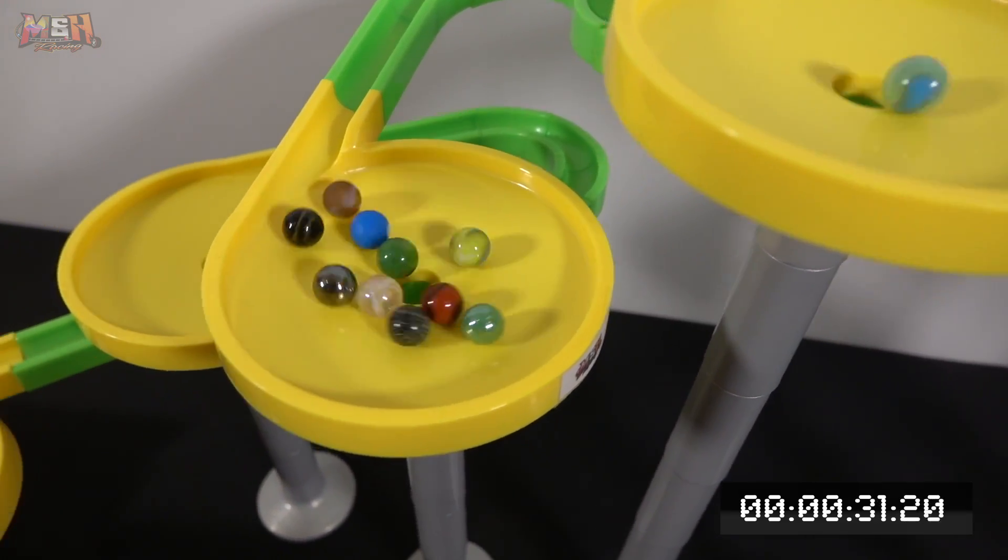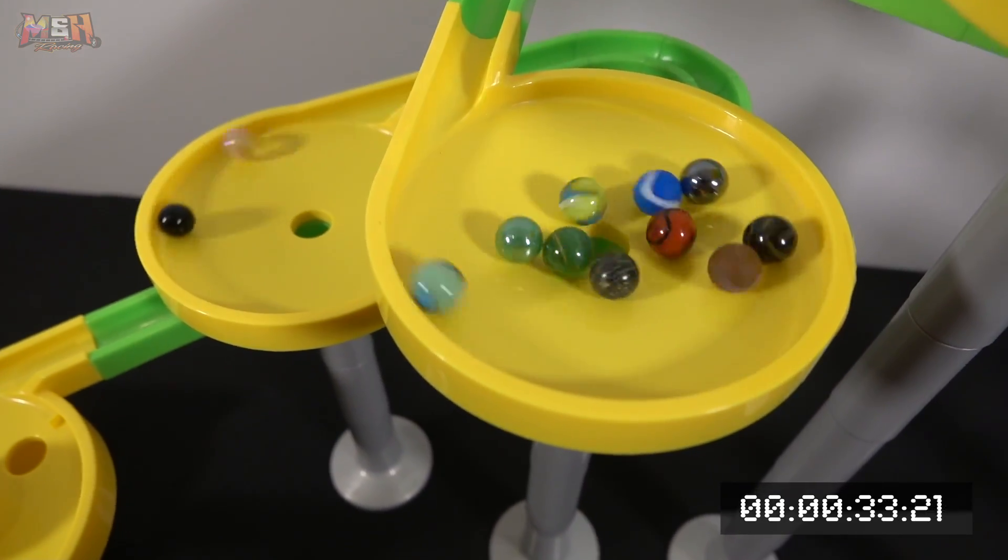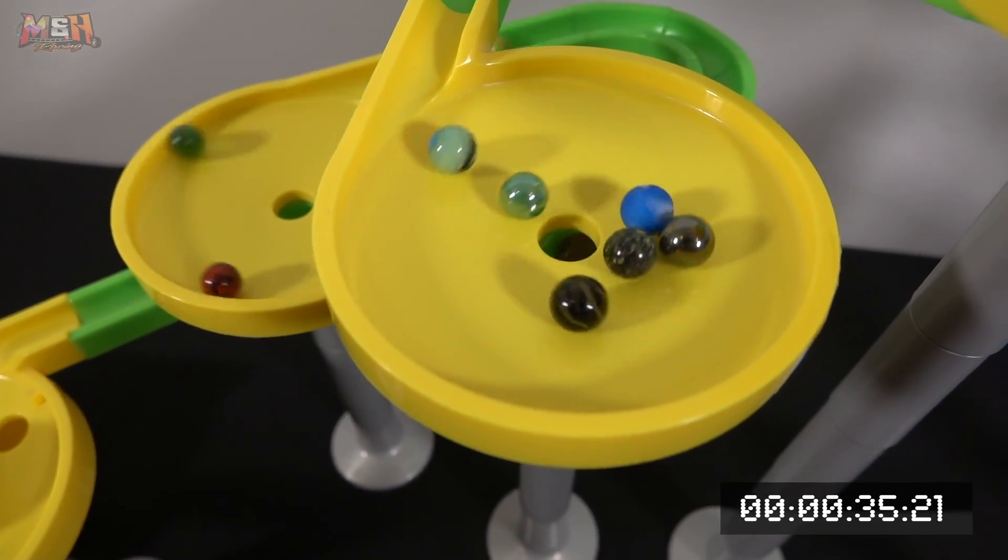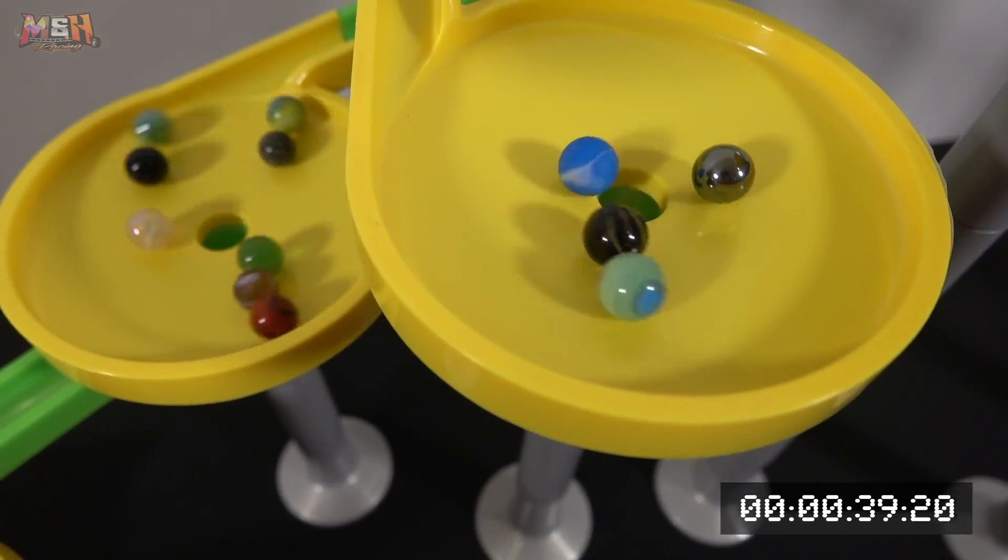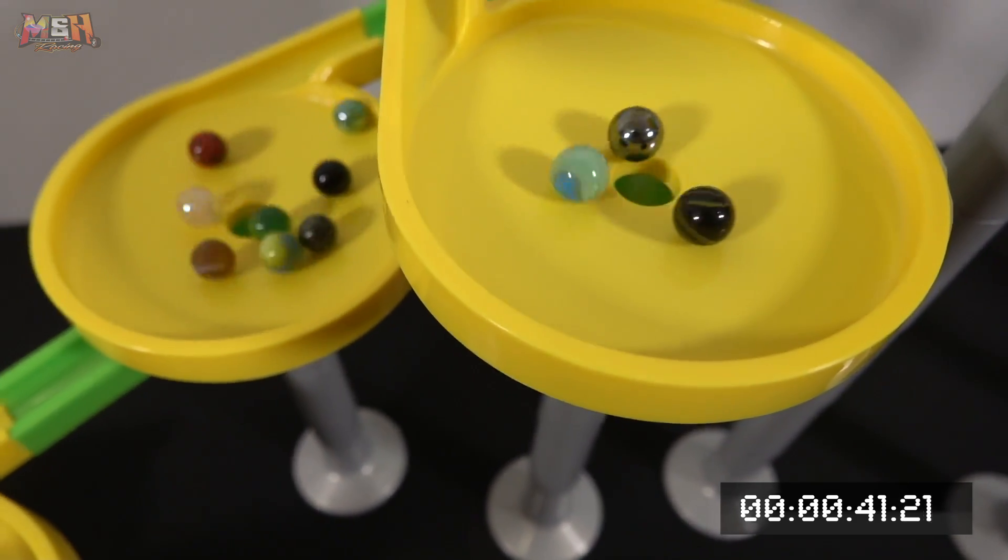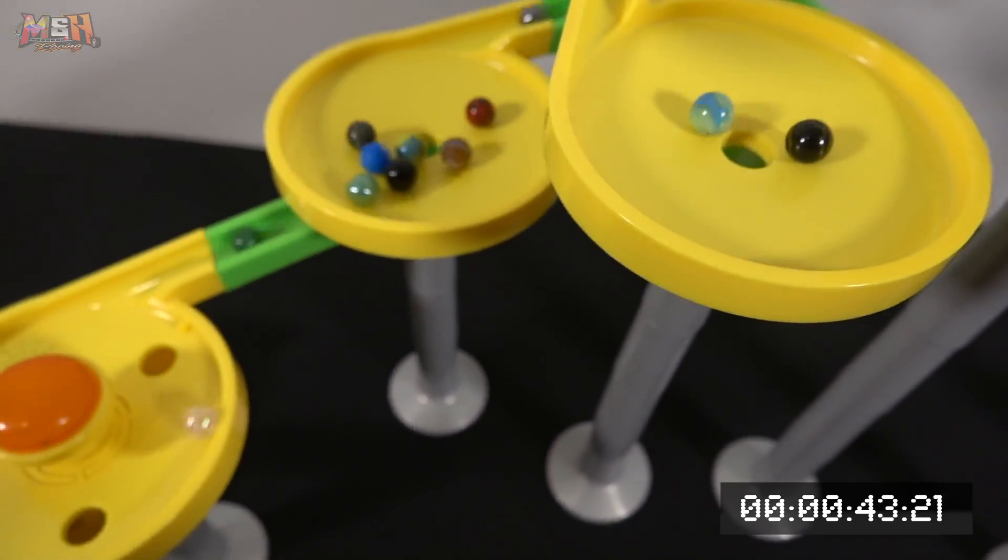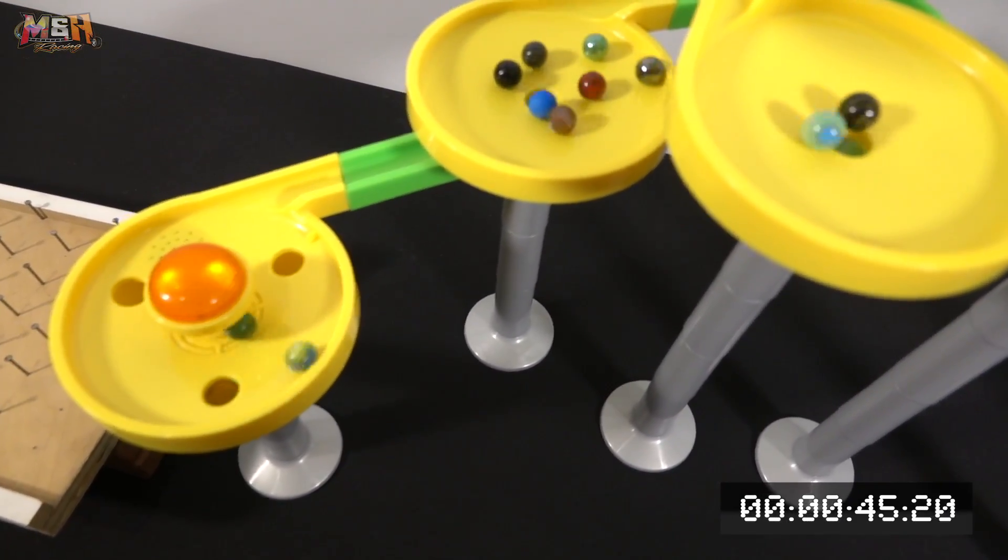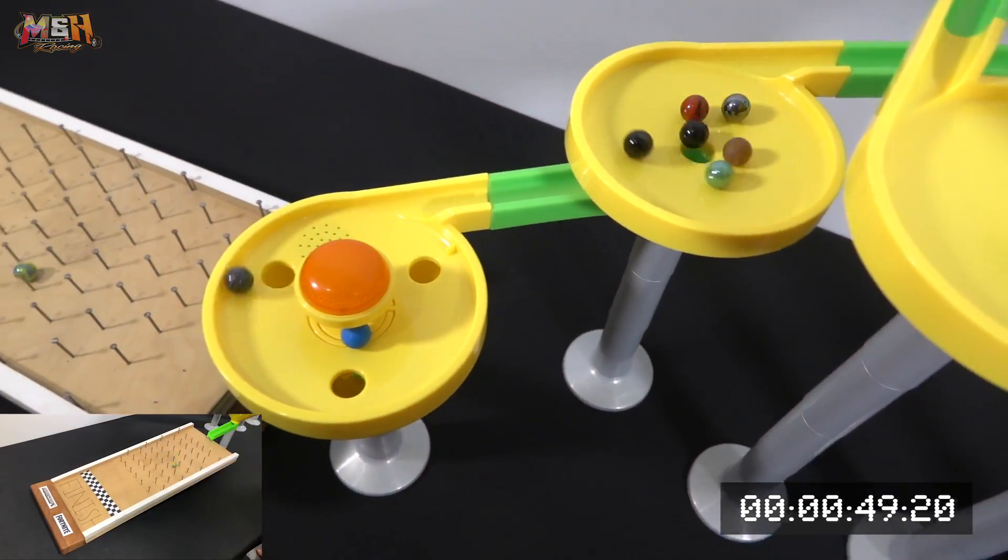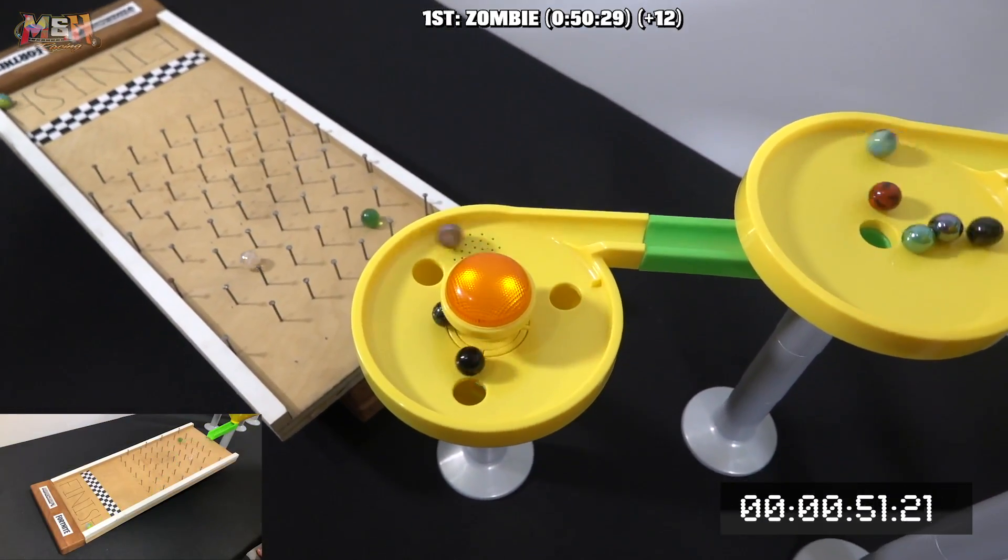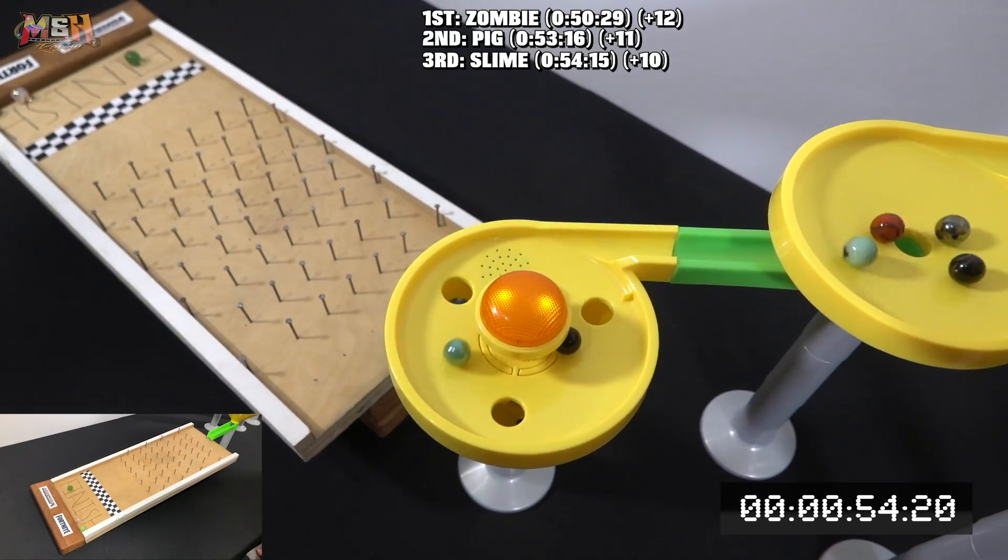Pig and Slime are holding their ground, and Pig's able to get second into funnel number three, which isn't too bad. Pig still got the inside corner and he's just skimming the edge. He'll be first in the pinball dish, but will he take it? And it's going to be Zombie who gets first place, followed by Pig and Slime. Team Minecraft taking home the first three spots.